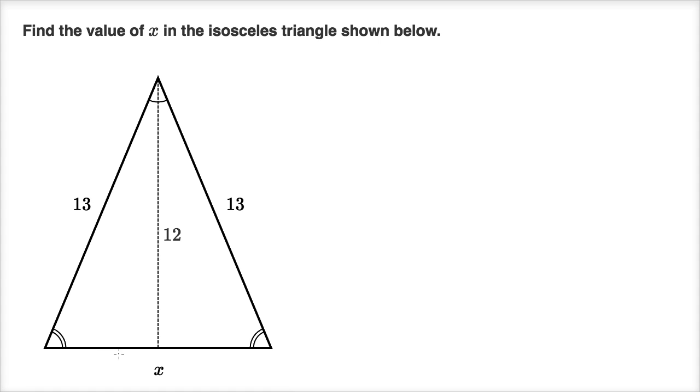Well, the key realization to solve this is to realize that this altitude that they dropped is going to form a right angle here and a right angle here. And notice, both of these triangles, because this whole thing is an isosceles triangle,